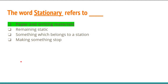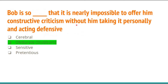The word 'stationary' refers to paper and writing materials — option A. Next, 'Bob is so ___ that it is nearly impossible to offer him constructive criticism.' The right answer is option B: 'obdurate,' which means stubborn. Basically, Bob is very stubborn, so whenever constructive criticism is offered towards him, he takes it personally and acts defensive.